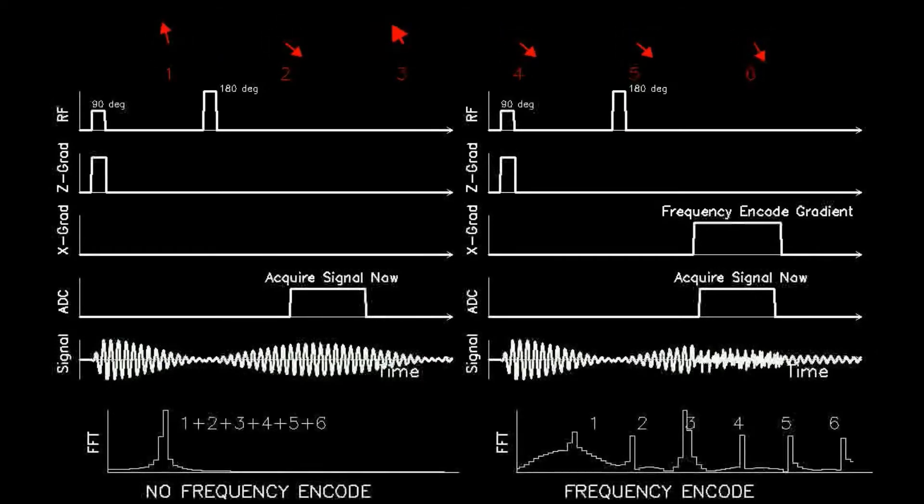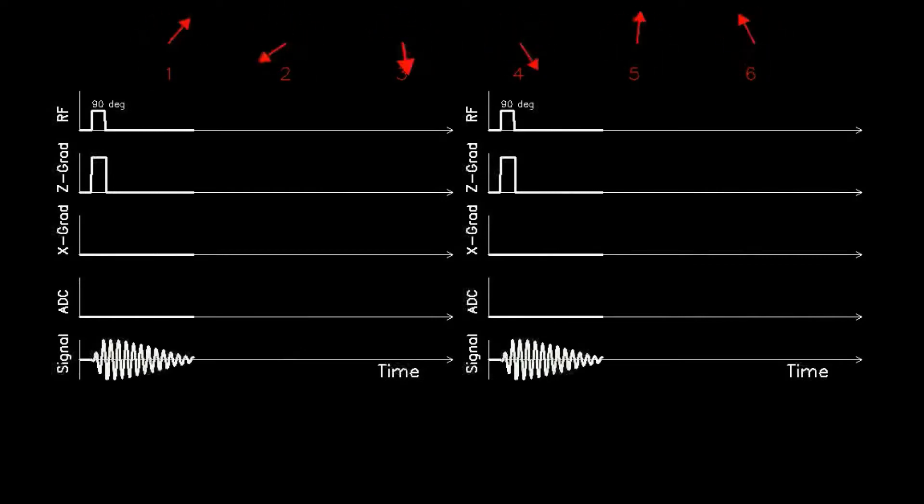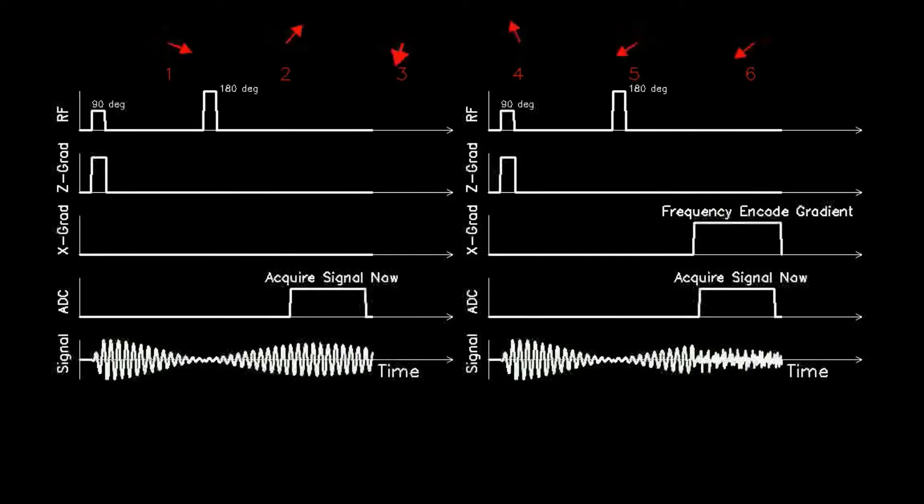Below them are two sets of timelines. The right side incorporates frequency encoding while the left side does not. For both sides, the top timeline shows the RF power causing the initial 90-degree spin flip, followed by the 180-degree spin flip required for the spin echo.